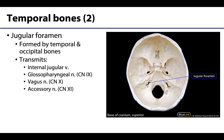My all-time favorite foramen: the jugular foramen — notice its oddly irregular shape. It's actually between the temporal bone and the occipital bone. Bone forms around neurovasculature, so the shape of neurovasculature dictates the size and shape of the foramen. The internal jugular vein — carrying venous pressure from venous sinuses that drain the brain — is largely responsible for this irregular shape. Once past the jugular foramen, the venous sinuses become the internal jugular vein.